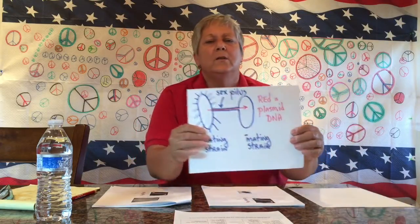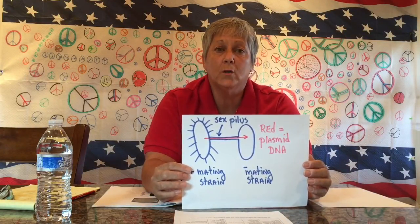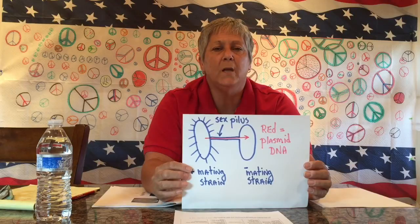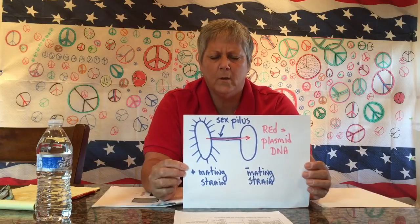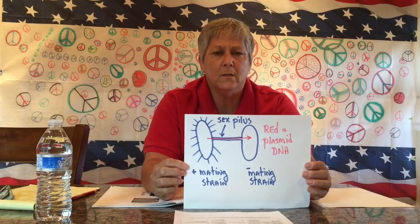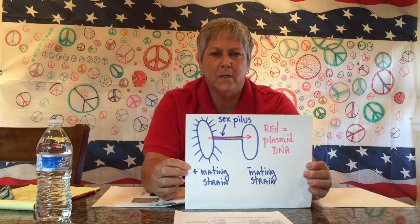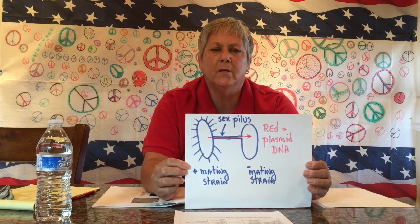Here's a simple diagram. We need two bacteria for conjugation to take place, and we don't refer to bacteria as being male or female — we refer to them as mating strains. The bacterium that makes a copy of some of its DNA and donates that copy to a recipient cell is called the positive mating strain, and the recipient cell is the negative mating strain.